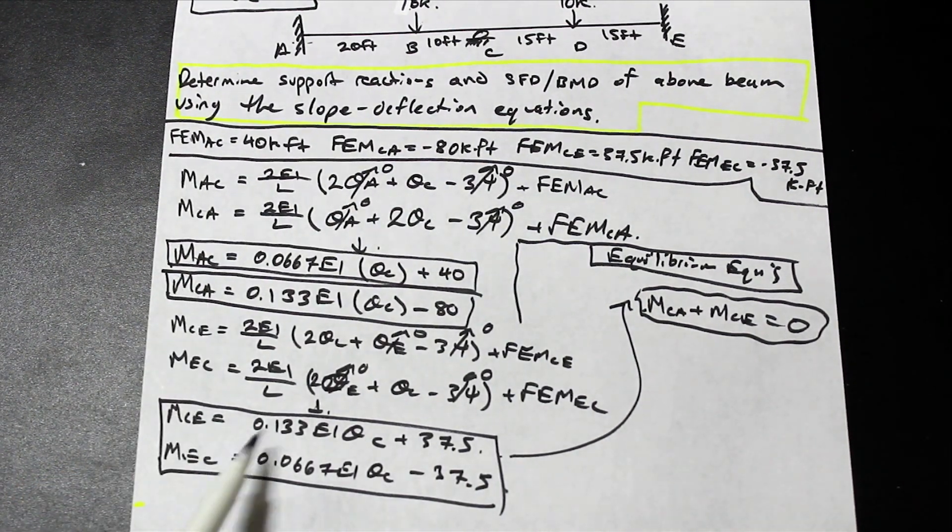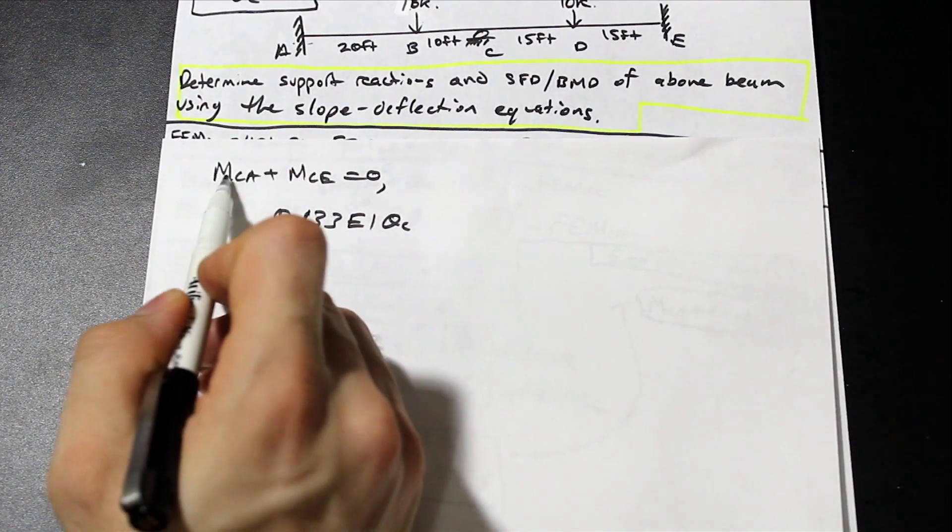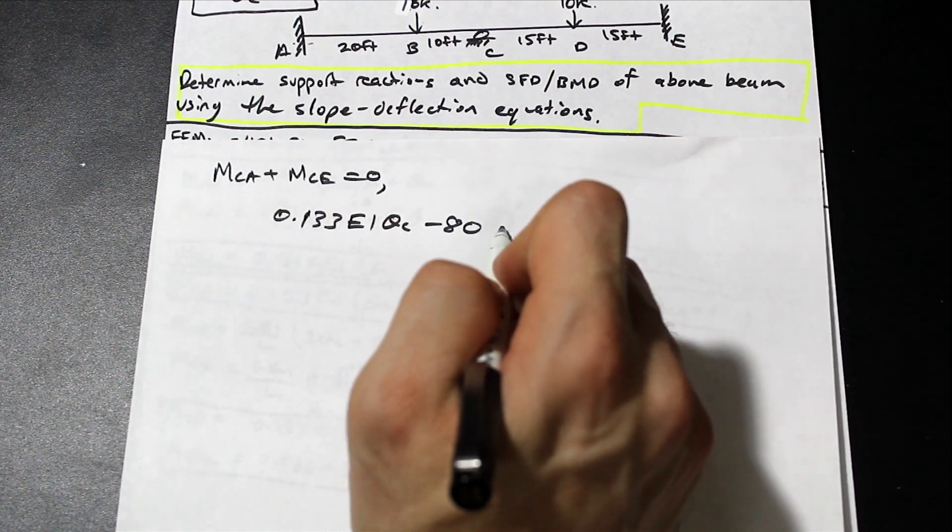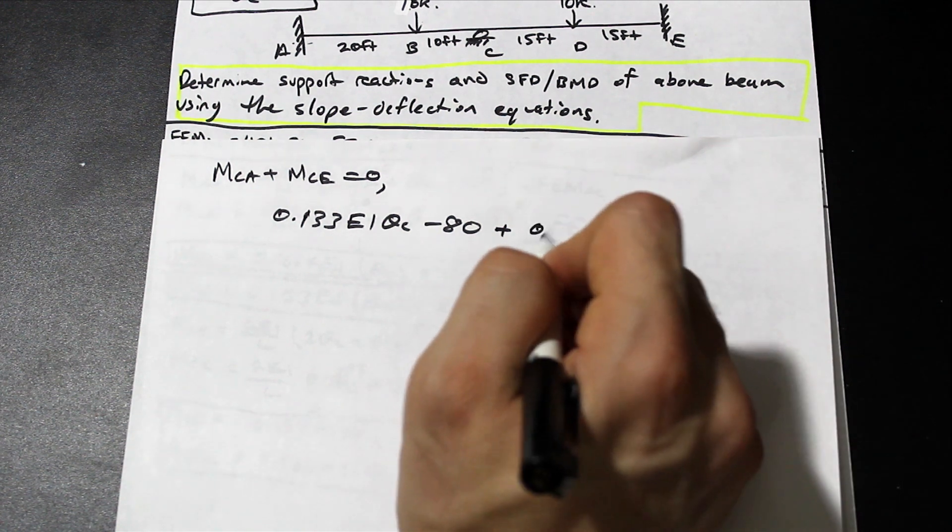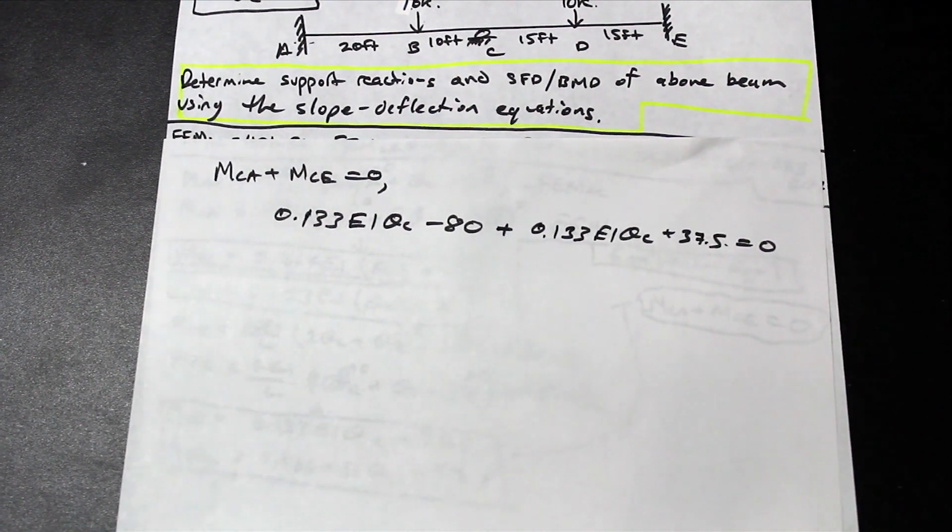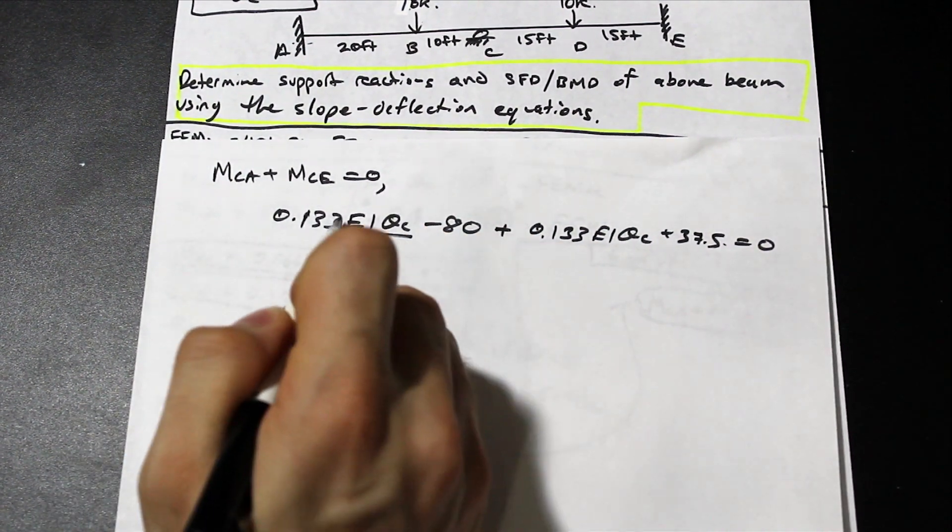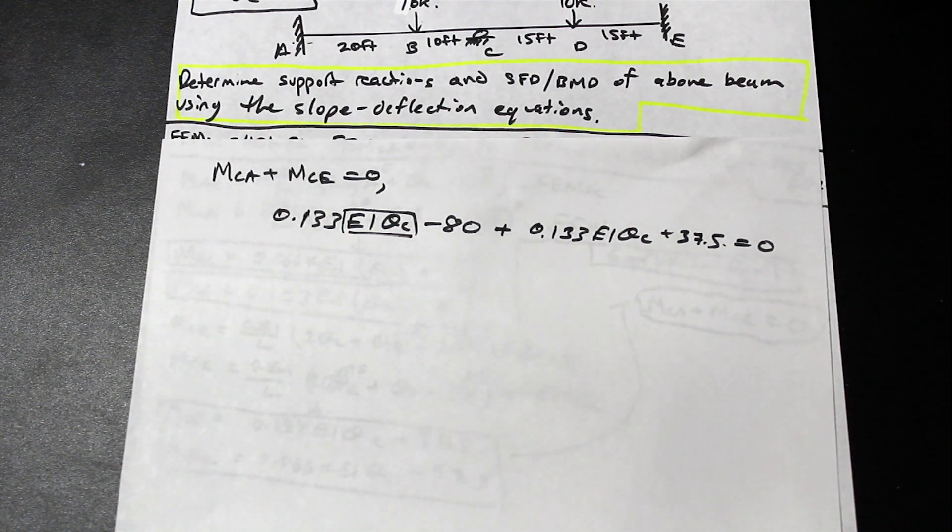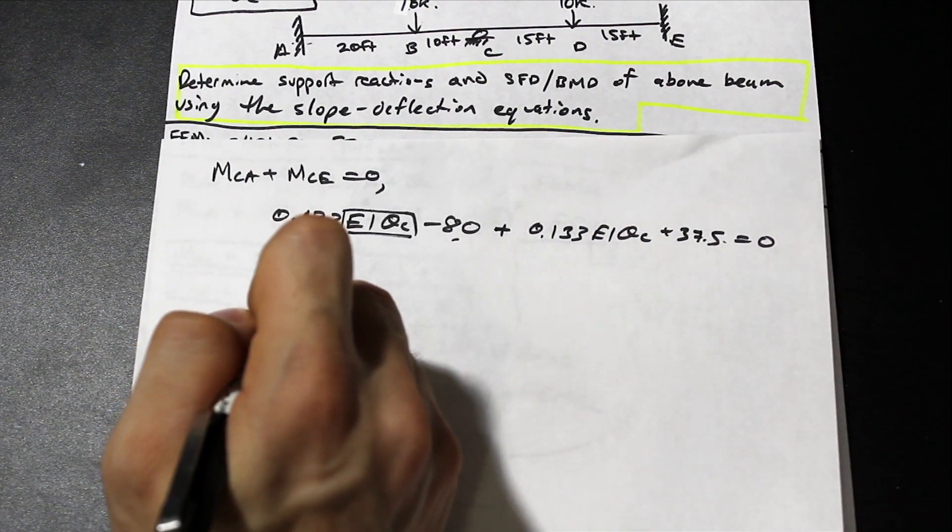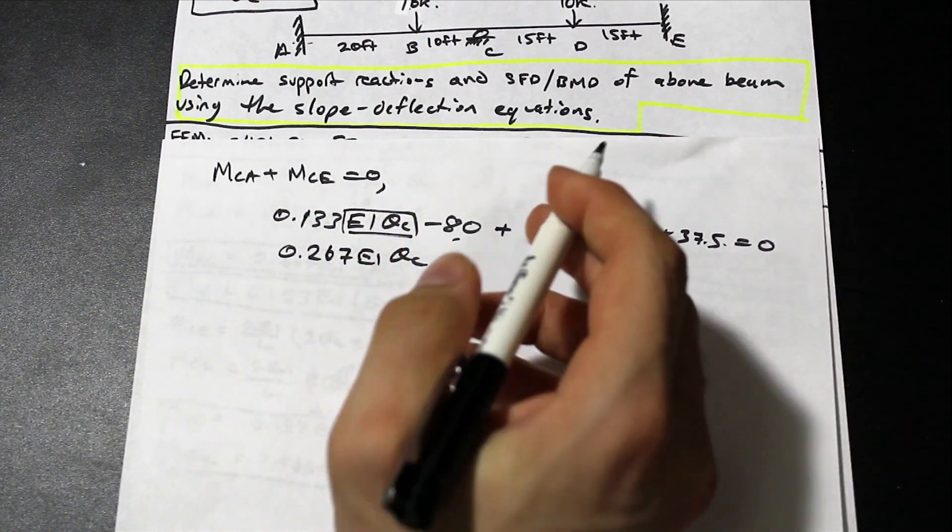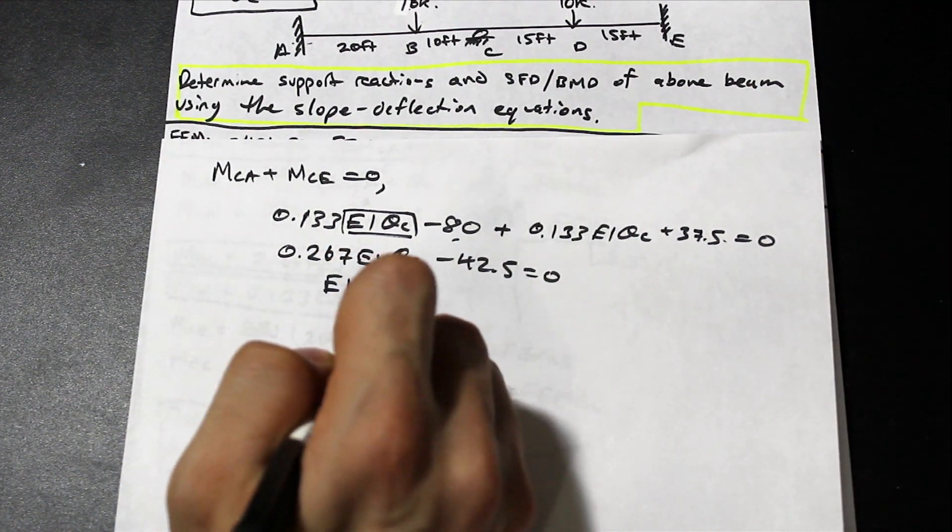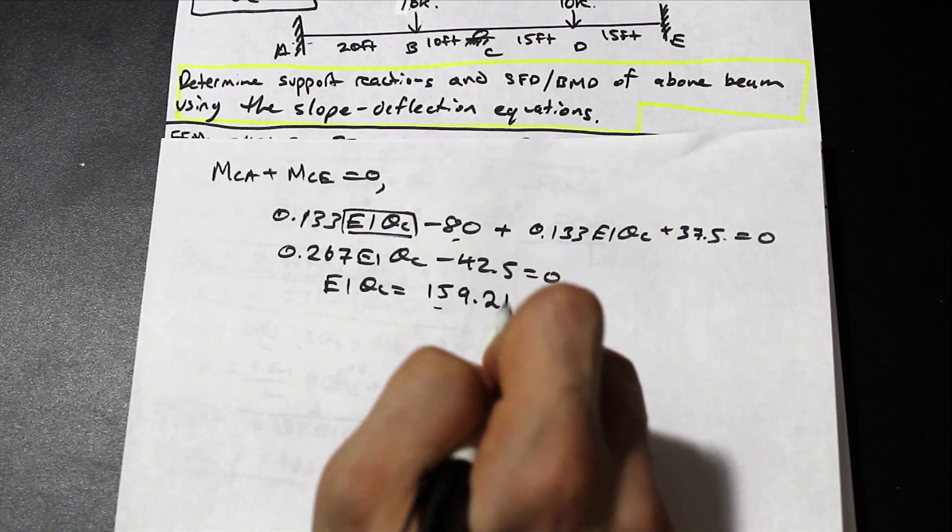So if we go ahead and we plug in MCA and MCE into this equation, we're going to get, so we're just plugging in MCA which was 0.133EI θC minus 80, and we are going to just move CE, so we have that, so that's going to be plus MCE, MCE was 0.133EI θC plus 37.5, and that's equal to 0. And now you'll see, actually, we're not given the value of EI in this problem, but what we can do is we can solve for this term here. So this whole term EI θC is unknown, so let's go ahead, we can rearrange, and we can, we have like terms here, and we have constants here, so let's just go ahead and add those and add these two terms together, and you'll get the value 0.267EI θC minus 42.5 equals 0. And now if we just move 42.5 to the other side of the equation and divide by 0.267, we get EI θC is simply 159.2 kip feet squared.